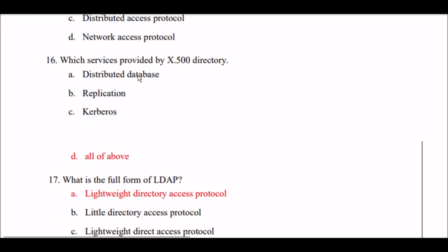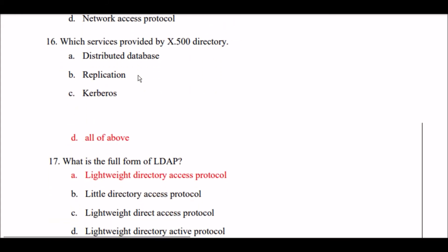Next question: Which service is provided by X.500 directory? Option A: distributed database. Option B: replication. Option C: Kerberos. Option D: all of the above. The right answer is Option D — distributed database, replication, and Kerberos are all services provided by the X.500 directory.